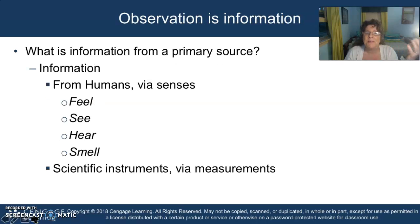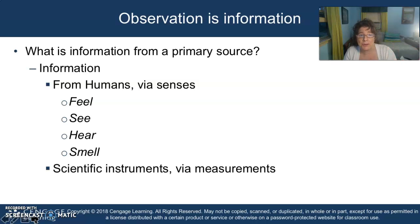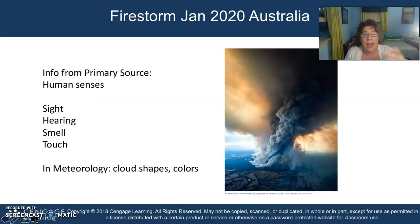From humans, you generally gather sensory information from hearing and seeing and smelling and feeling weather phenomena. From scientific instruments, you generally gather measurements. You might do calculations from those measurements. Humans do qualitative observations through their senses, and scientific instruments do measurements through their apparatus.